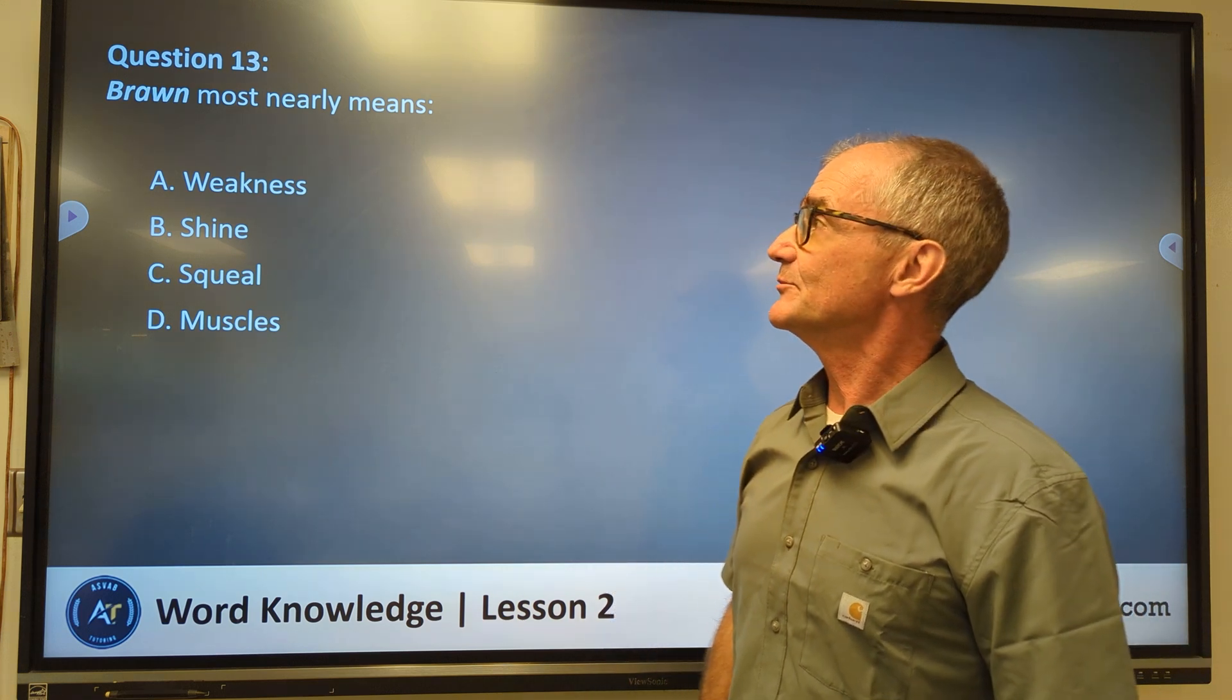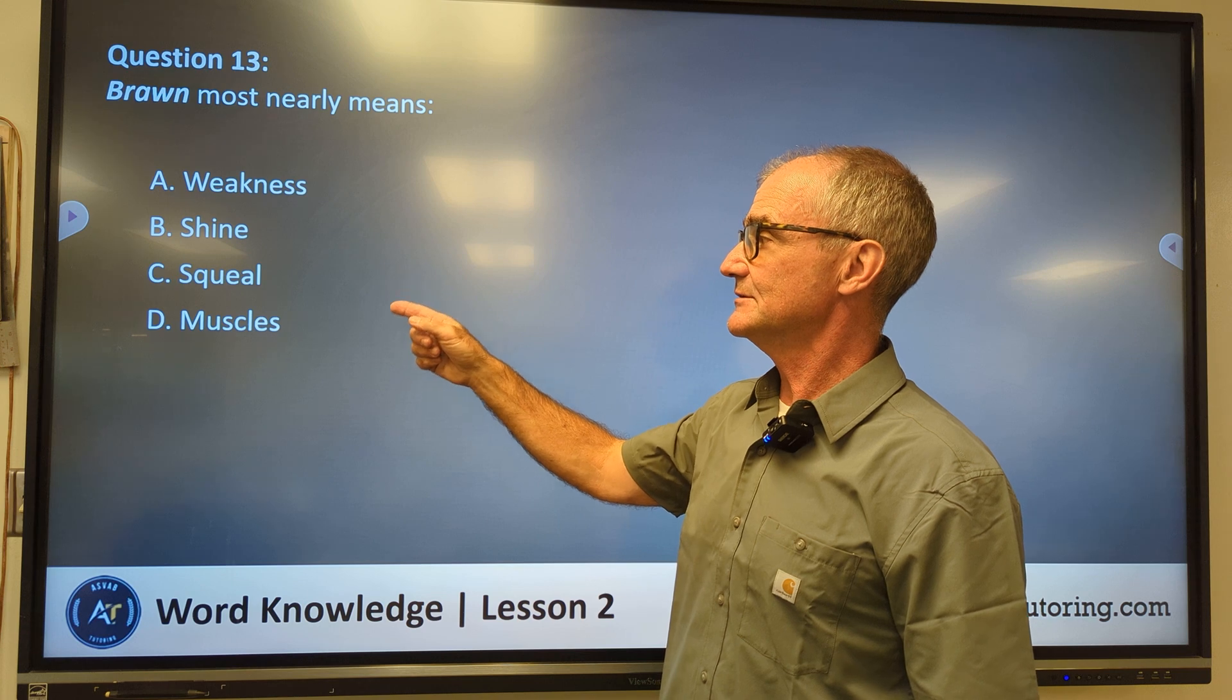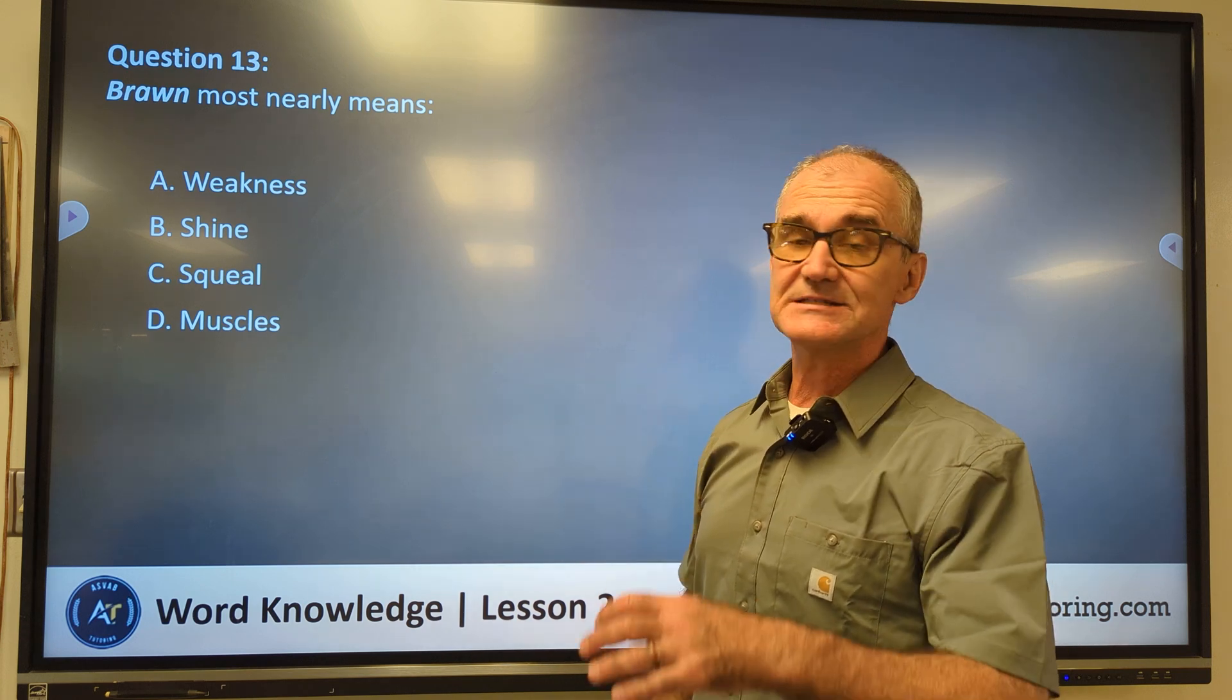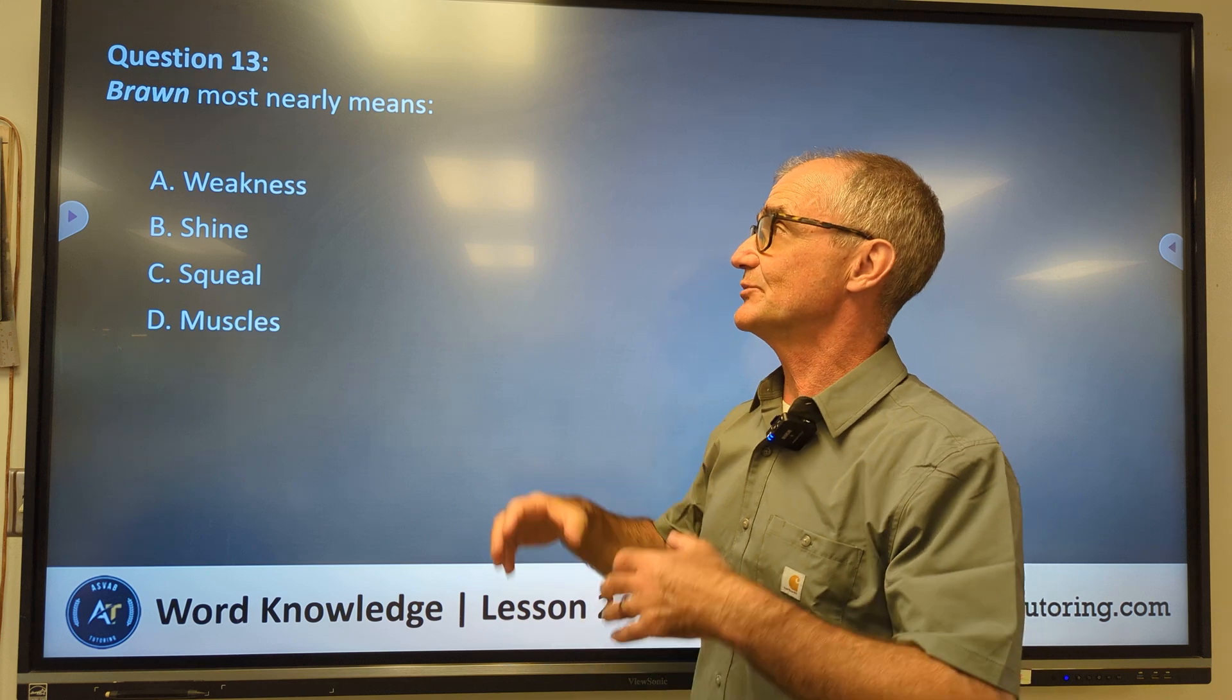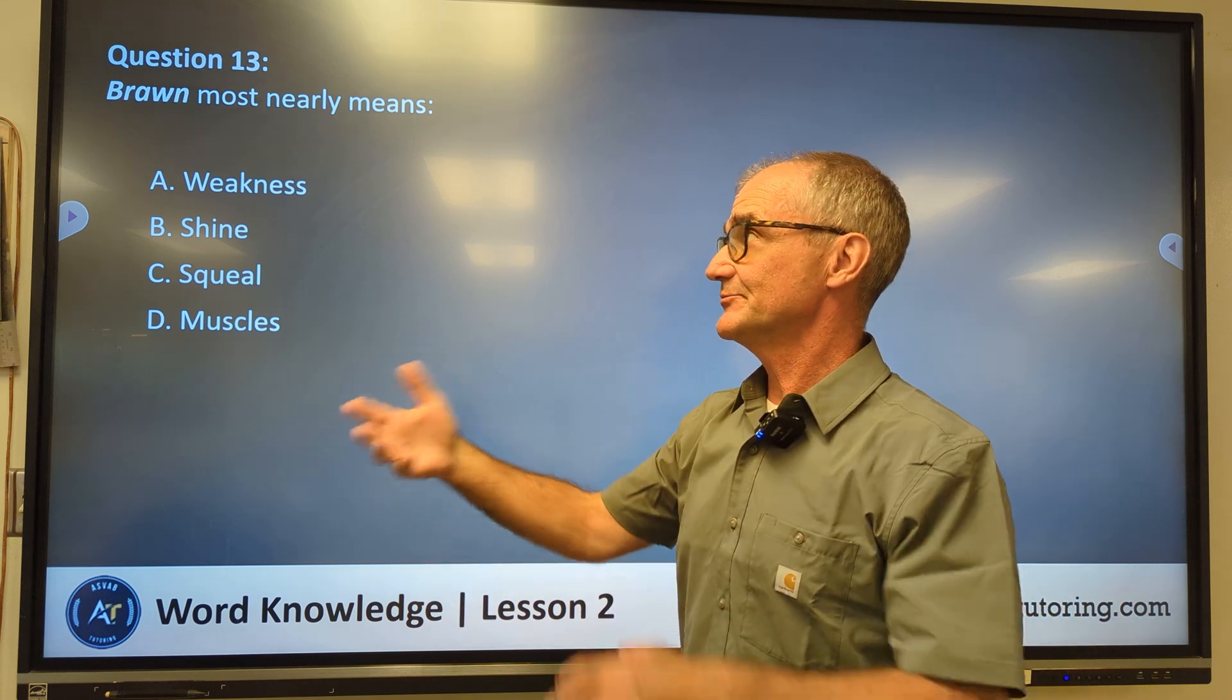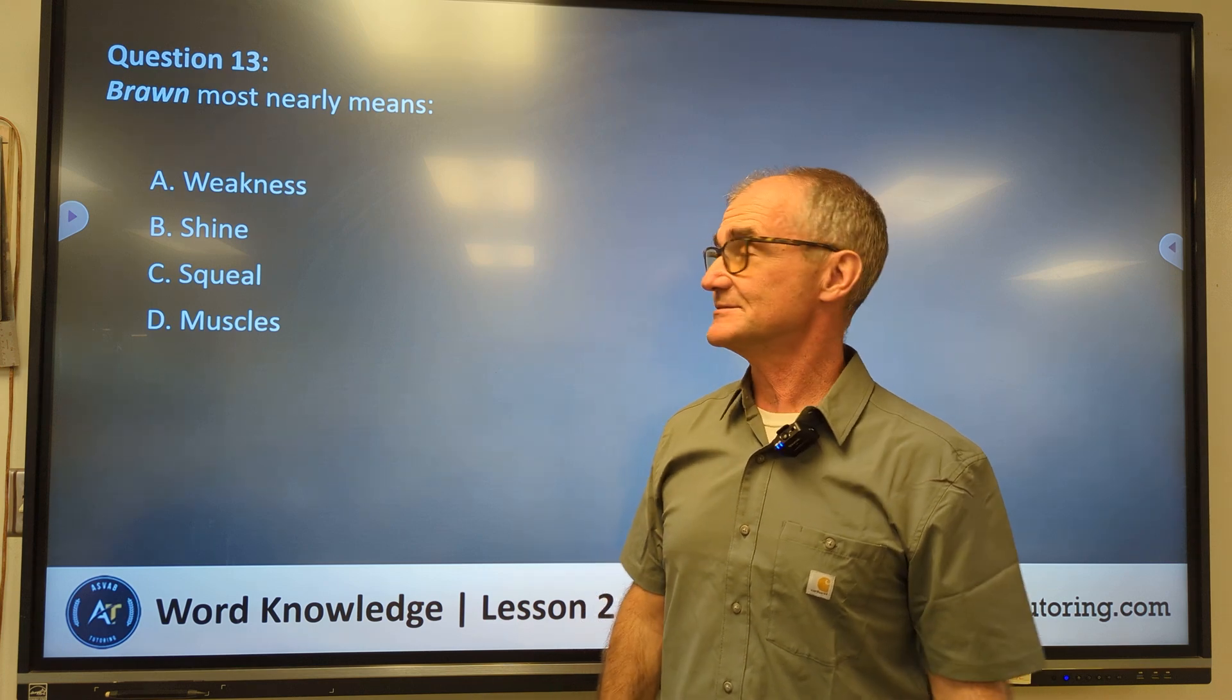Number thirteen, brawn, most nearly means weakness, shine, squeal, muscles. Brains or brawn, those are opposite things. That's a common phrase. Brawn means muscles versus brains. So the only correct answer would be answer D, muscles.